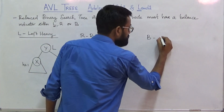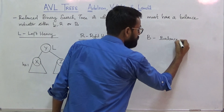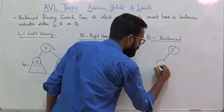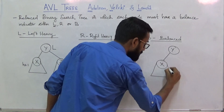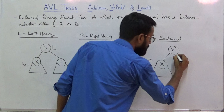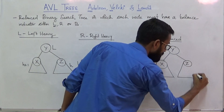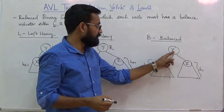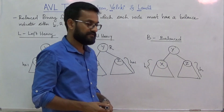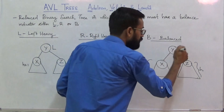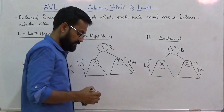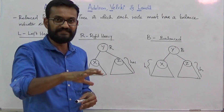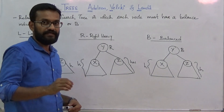The next balance indicator is B, which stands for balanced. Consider a subtree rooted at Y having a left subtree rooted at X with height H and a right subtree rooted at Z also having height H. Since both subtrees of Y are of the same height, node Y is balanced. If it is possible to assign a balance indicator of either L, R, or B to each and every node in a binary search tree, then you can call that binary search tree an AVL tree.